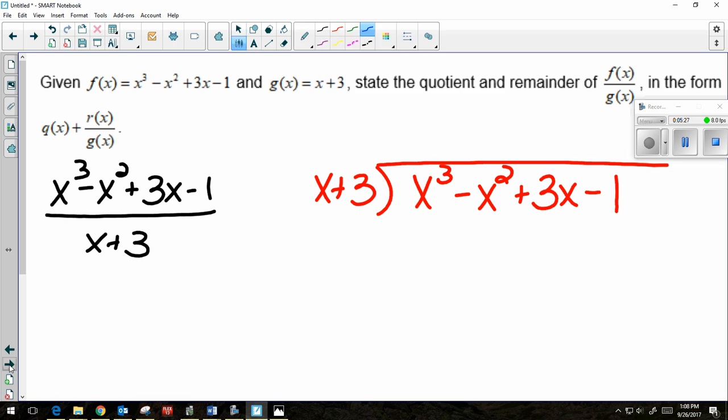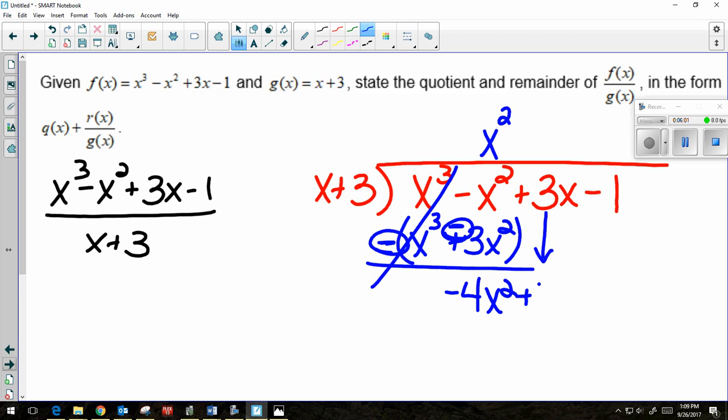So what times x gives me x³? x². Because remember my goal is to cancel those first terms. So now I multiply. x² times x is x³. x² times 3 is 3x². And now I'm subtracting. But remember, you're really subtracting this whole thing. So I like to make my subtraction sign and then change my signs immediately. So x³ minus x³ cancels. -x² - 3x² is -4x². And then I bring down the next piece.